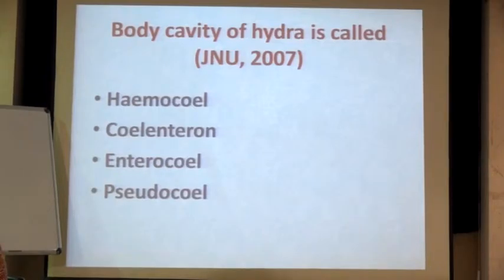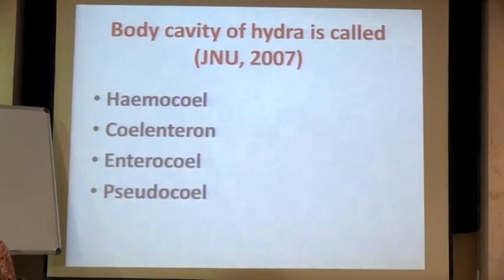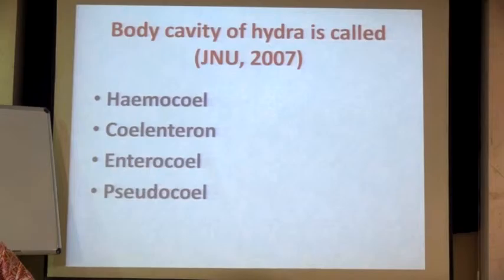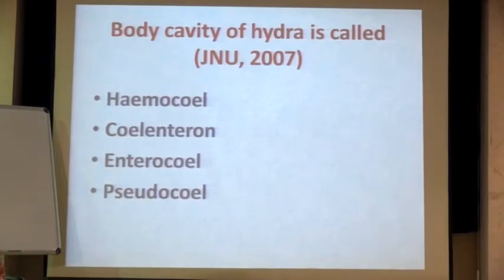Blood cavity — or rather, the cavity filled with blood — which you generally see in arthropods is haemocoel. When you see hydra, you are talking about cnidarians, not arthropods — so haemocoel is not going to be your answer. If you don't know the terms, you won't be able to justify which answer to select. Coelenterates, including hydra, are going to have a special kind of cavity called enteron — actually, the word 'coelenterate' came from coelenteron, and that is why they were named coelenterates. So for hydra, the answer is going to be coelenteron.